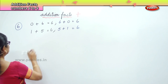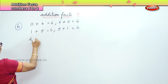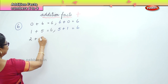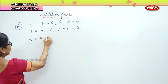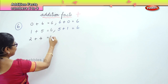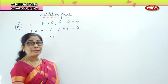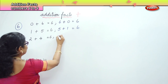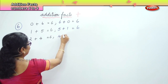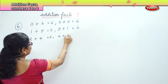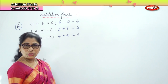Next we do 2. 2 plus 4 is equal to 6. And the reverse: 4 plus 2 is also 6.